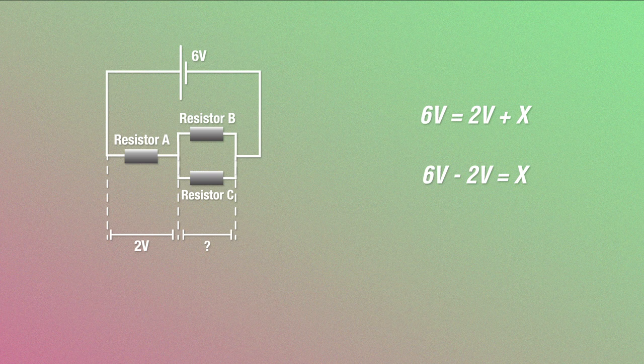So if resistor A has a potential difference of 2 volts, the combined potential difference of resistor B and C has to be 4 volts. Obviously, right? But that's the combined difference.